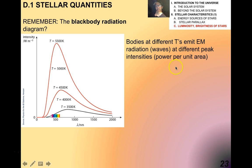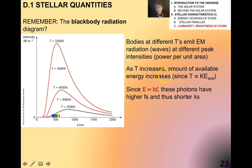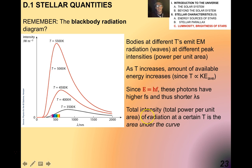Remember the blackbody radiation diagram. Bodies at different temperatures emit electromagnetic radiation at different peak intensities or power per unit area. As the temperature increases, the amount of available energy increases — that's why this peaks so dramatically. Since E equals hf, these photons have higher frequencies and thus shorter wavelengths. The total intensity of radiation at a certain temperature is the area under the curve.